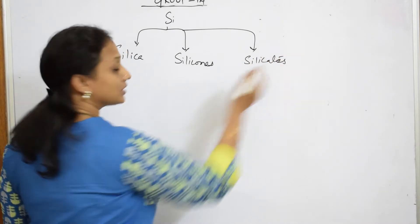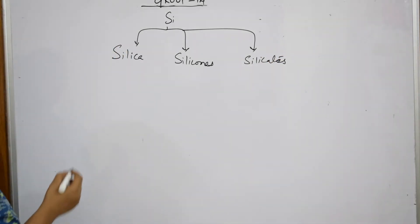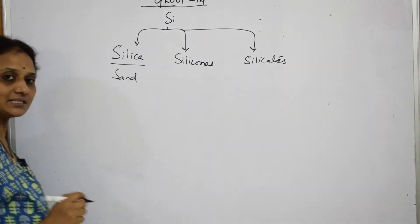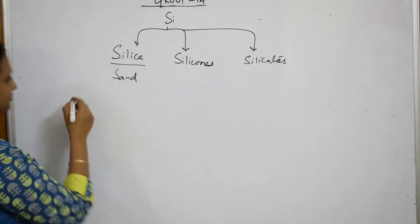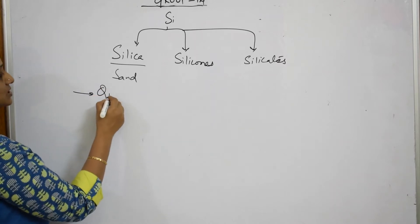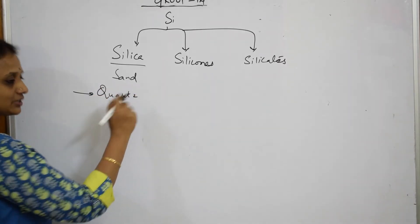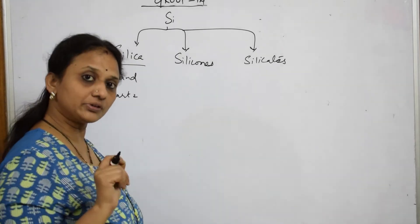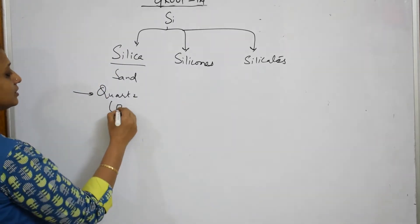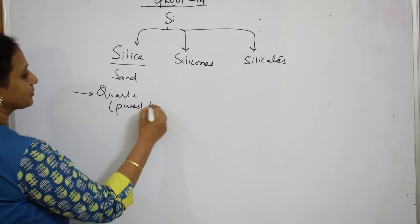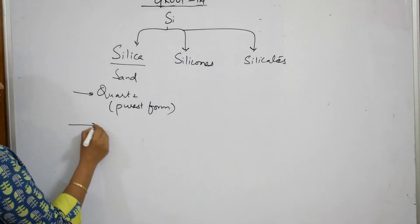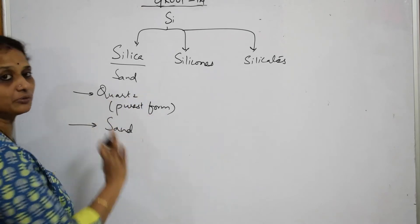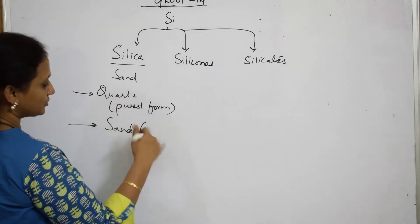Now when I speak about silica, or your sand, this exists in three different forms. The first structure is called quartz crystal, which is there in your watches. The quartz crystal is basically the purest form of silica. This is the purest form. After that, you have your sand.